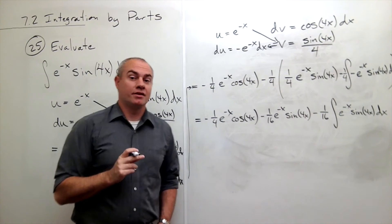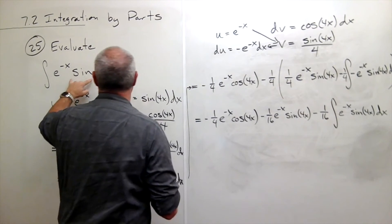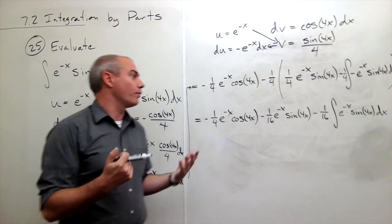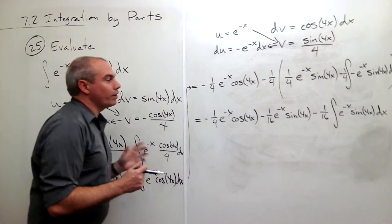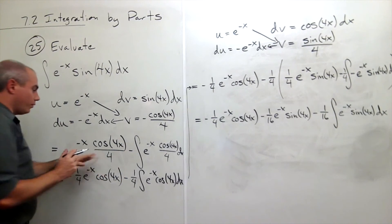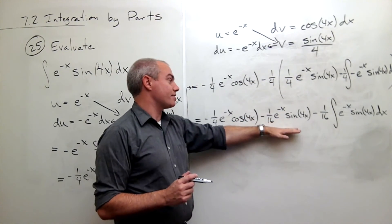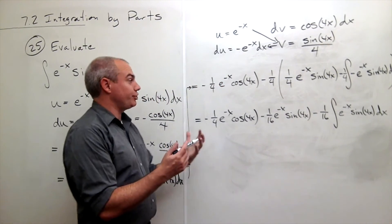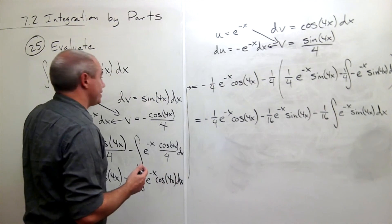If you'll notice, this integral is exactly what I started with — and at first this is kind of alarming. It's like, wait, that's what I started with. How did I get from there back to itself again? So now we're going to use a little trick: we realize that this entire expression is equal to itself, so if this integral equals this expression, then I can add 1/16 of this integral to the other side.